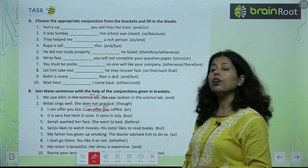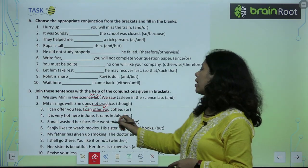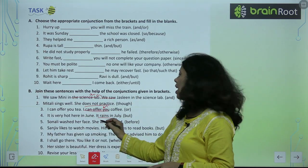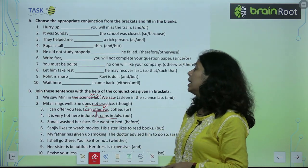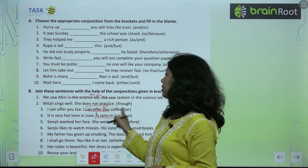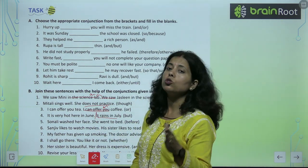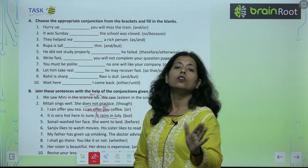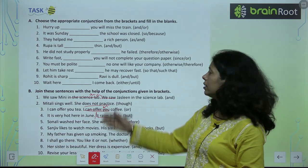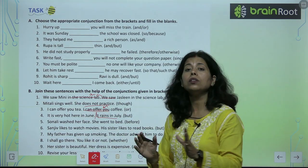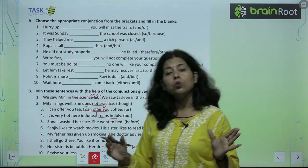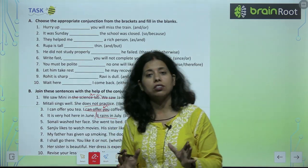It is very hot here in June, but it rains in July. Pura statement aisa rahega, add ho jayega beech mein 'but'. June mein bahut garmi rahti hai, but July mein yahan pe barish hoti hai. So like this, friends, you have to join two sentences or two words with the help of a conjunction.